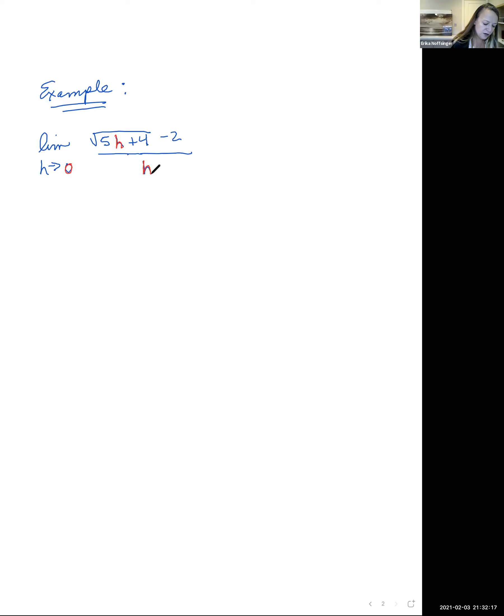Once we do our direct substitution, recall that we drop the limit. And so doing that, we have the square root of 5, I see an h there, I'm going to put parentheses and come back and plug in 0, plus 4 underneath that radical, then I have a minus 2 all over, I see an h there, I'm going to plug in 0.